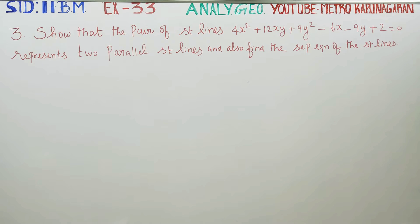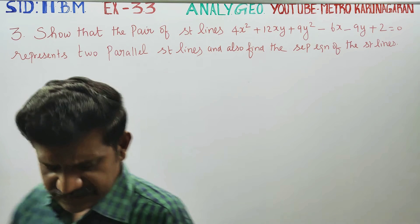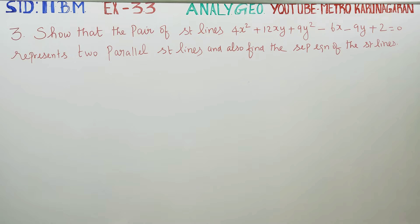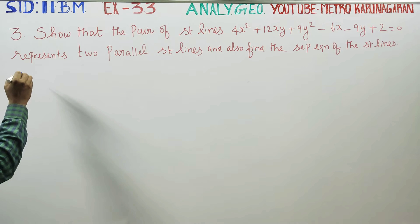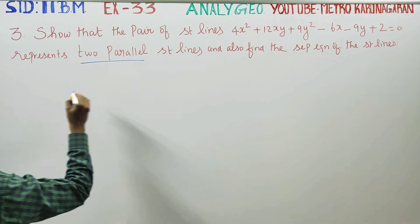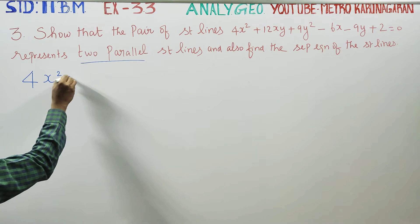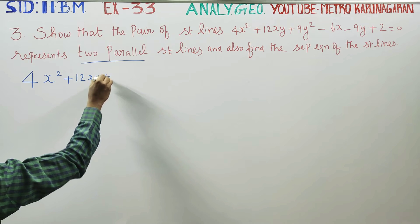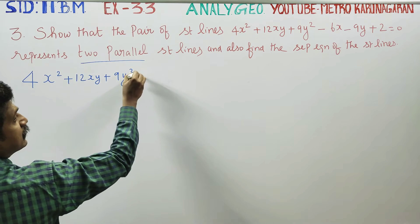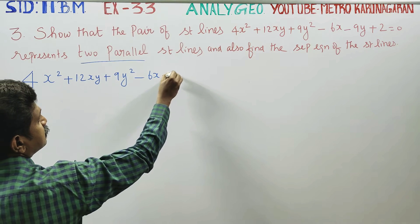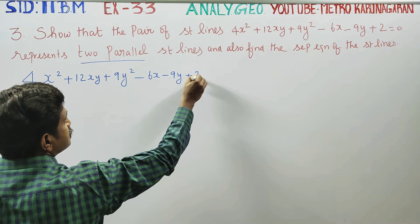Dear 11th standard Business Maths students, in Exercise 3.3, sum number 3: show that the pair of straight lines 4x² + 12xy + 9y² - 6x - 9y + 2 = 0 represents two parallel straight lines. Our equation is 4x² + 12xy + 9y² - 6x - 9y + 2 = 0.